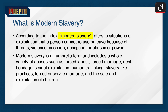Modern slavery refers to situations of exploitation that a person cannot refuse or leave because of threats, violence, coercion, deception, or abuses of power. Modern slavery is an umbrella term and includes a whole variety of abuses such as forced labor, forced marriage, debt bondage, sexual exploitation, human trafficking, slavery-like practices, forced or servile marriage, and the sale and exploitation of children.